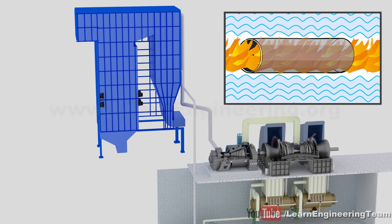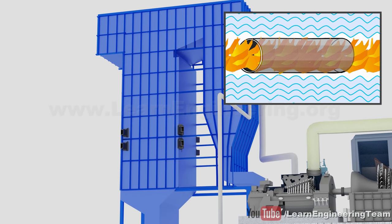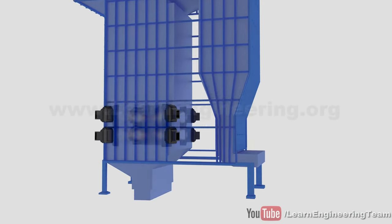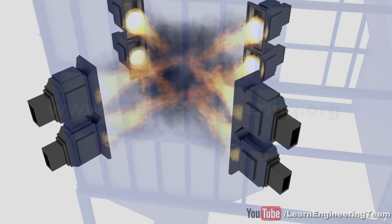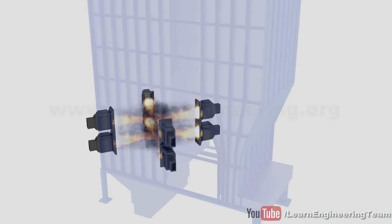There are also fire tube boilers, but they are used for small-scale applications. Burners in the boiler convert chemical energy in the pulverized coal into thermal energy. The hot gas that is produced travels all over the boiler.